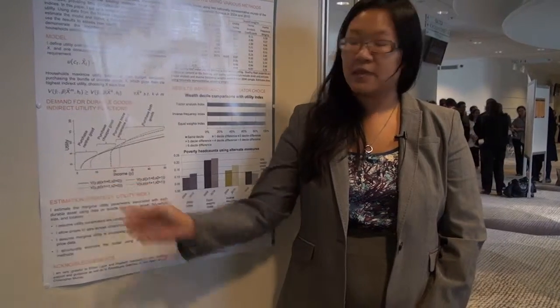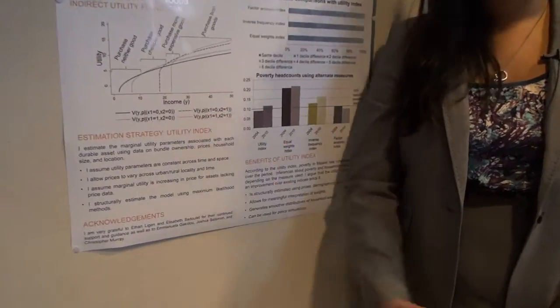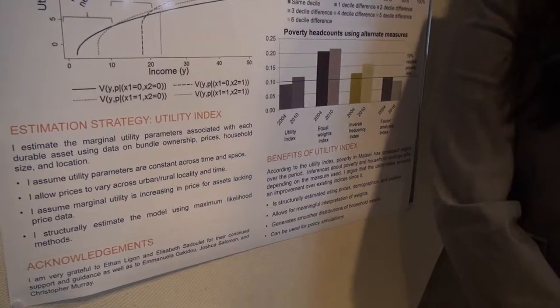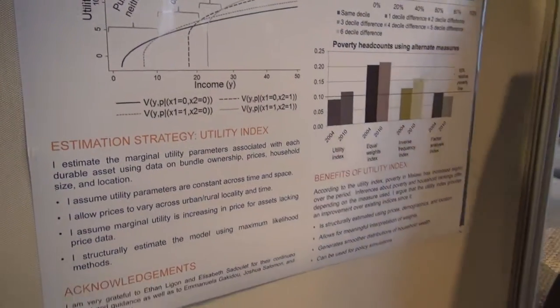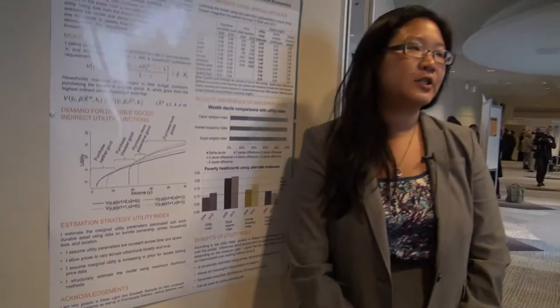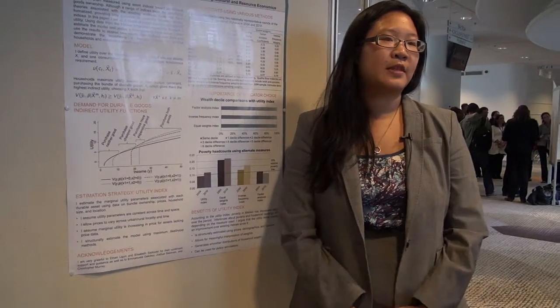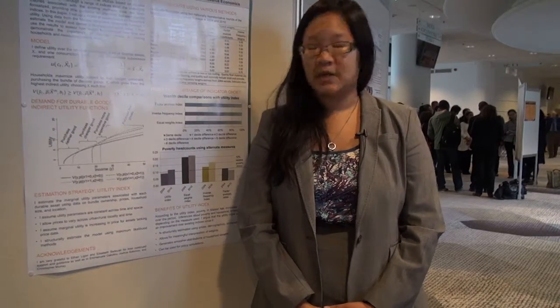At very low levels of income it is optimal to purchase neither good, and at very high levels it is optimal to purchase both. From this model, what we are interested in is estimating the marginal utility associated with each of the discrete goods. I do so by writing down the likelihood function of the observed data and using maximum likelihood estimation.